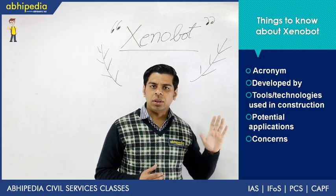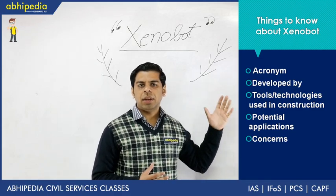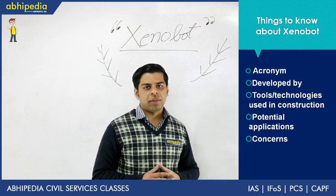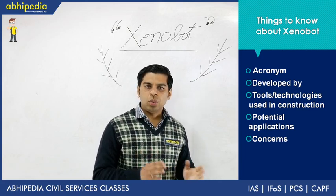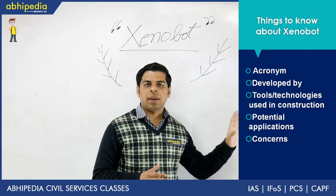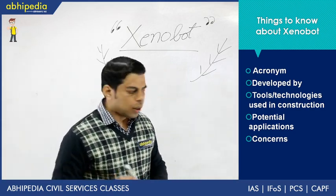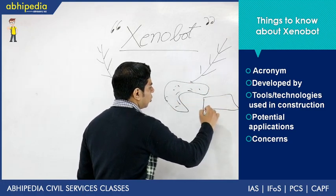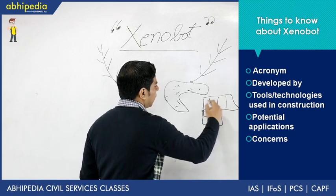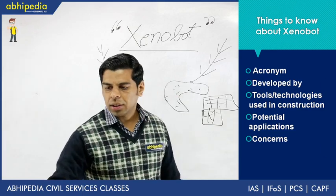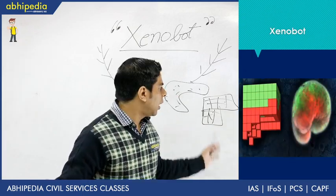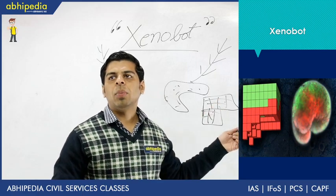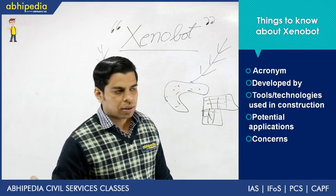Coming to the tools and technologies used — this is quite a complex creation where two disciplines have come together: biotech and computing. Supercomputers using evolutionary algorithms have been used to modify stem cells in the desired direction. The diagram shows a combination of cells with a supercomputing image superimposed. On the left side is the supercomputer algorithm-based image, and the second shows the Xenobot — the living cell moving in a particular direction.